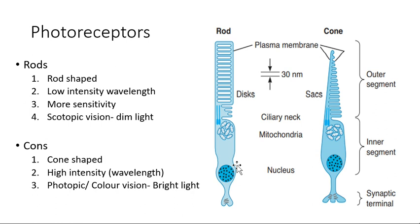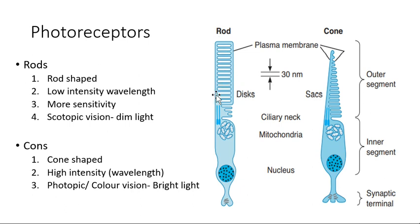There are two types of photoreceptors in the retina: rods and cones. Rods are rod-shaped and cones are cone-shaped. Each photoreceptor has three parts: the outer segment, inner segment, and synaptic terminal. The outer segments differ between the two: in cones the membrane is invaginated inside forming a cone shape, while in rods there are separate discs present to increase surface area so that maximum light can be received.